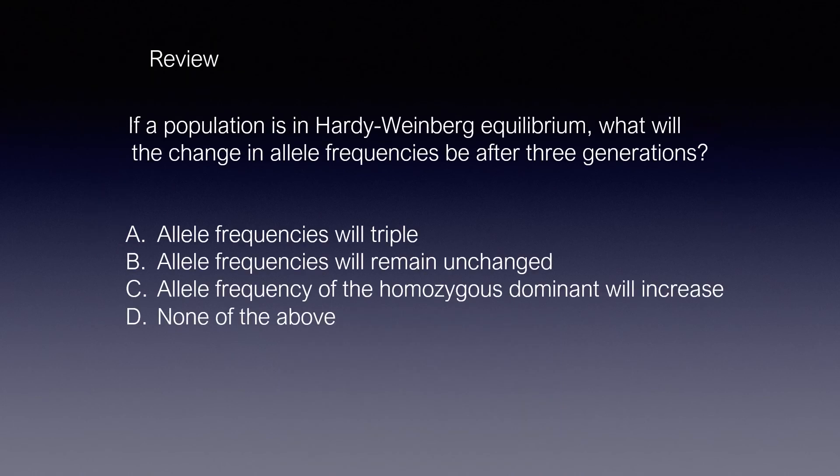Here's a question to answer, and the answer will be circled at the end of the video. The reason the answer is B is because the values of p and q do not change, indicating that allele frequencies are not changing.